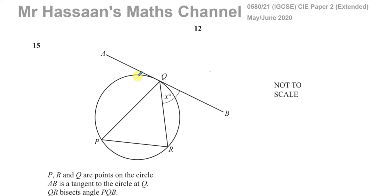So now we have question number 15 from this IGCSE Cambridge May/June 2020, 0580, paper 2, variant 1.